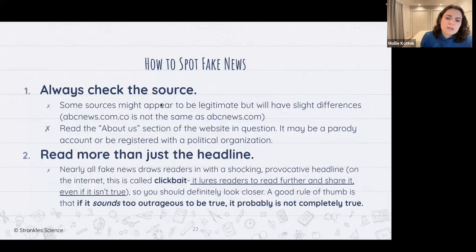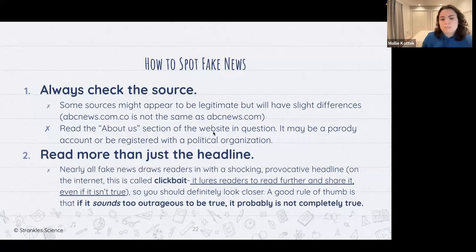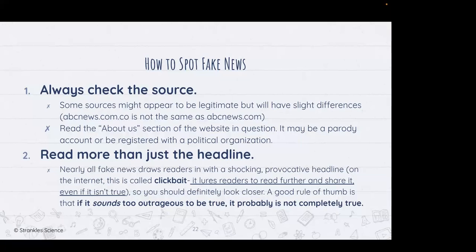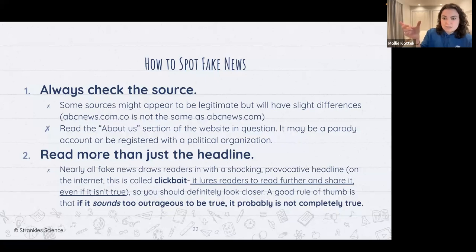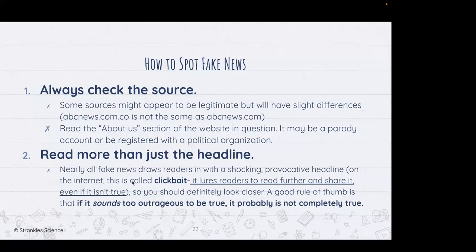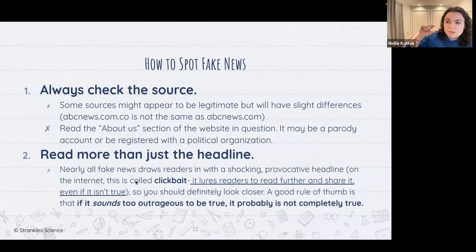You can spot this by checking the source — where did this information come from? Read the 'About Us' section of a website; it could be registered with a political organization. Read more than just the headline. I can manipulate what you think about a graph just by writing the title I want you to think as the title, and some people only read that. Read the fine print — like we did asking what the key means, and whether one out of 10,000 versus four out of 10,000 actually makes that much of a difference.